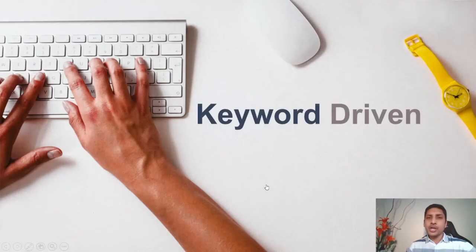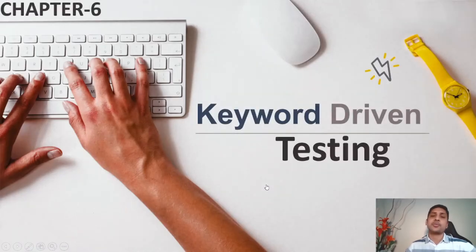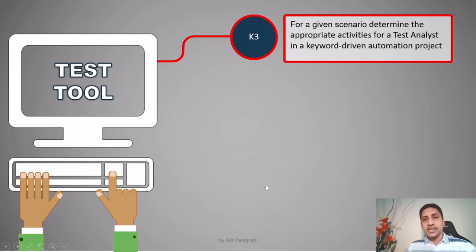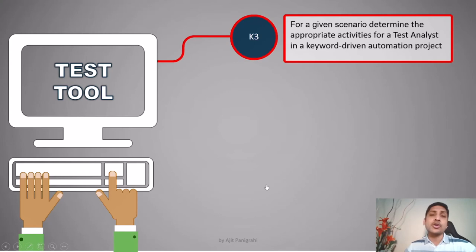In this lecture we are going to learn about keyword driven testing approach. The learning objective is: for a given scenario, determine the appropriate activity for a test analyst in a keyword driven automation project. This topic is marked as K3. By the end of this lecture you need to understand the role and responsibility of the test analyst in a keyword driven automation project.